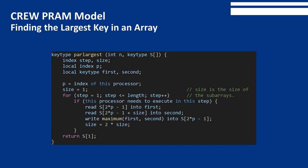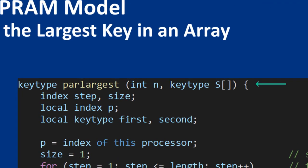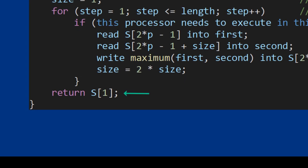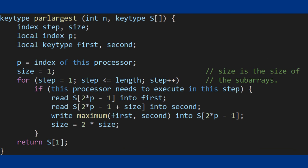The algorithm presented illustrates the actions shown in the provided figure. It is written as a function, and for parallel algorithms written as functions, at least one processor must return a value and all processors that do return values must return the same value. The inputs are a positive integer n and an array of keys S indexed from 1 to n; it outputs the largest key in S. It is assumed that n is a power of 2 and that we have n/2 processors executing the algorithm in parallel.